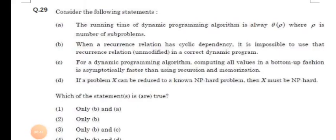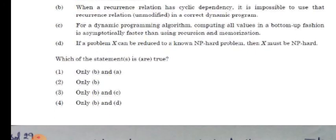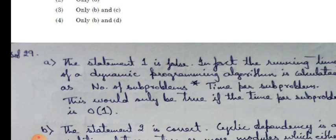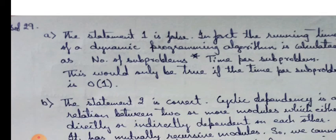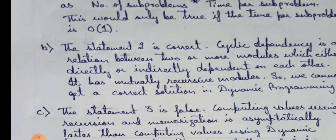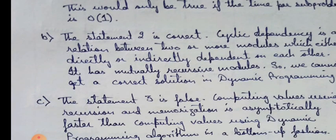In our next question, we have been given four statements and we have been asked which of the statements are true. So let's see the solution and check the correctness of each of the statements. The statement 1 is false. In fact, the running time of a dynamic programming algorithm is calculated as number of subproblems into time per subproblem. This would only be true if the time per subproblem is O of 1. The statement 2 is correct. Cyclic dependency is a relation between two or more modules which either directly or indirectly dependent on each other. It has mutually recursive modules. So, we cannot get a correct solution in dynamic programming.